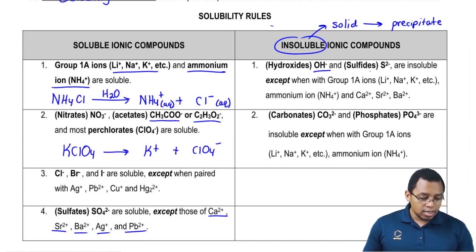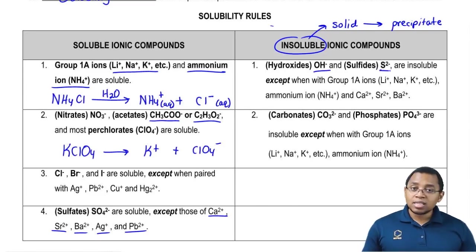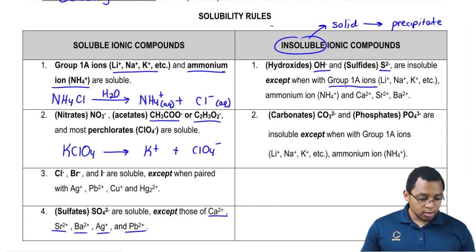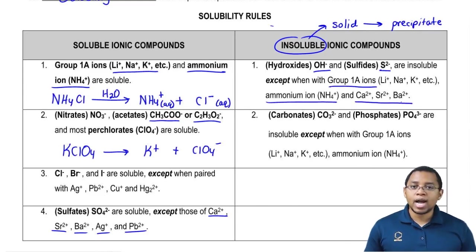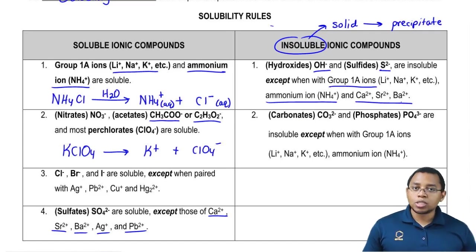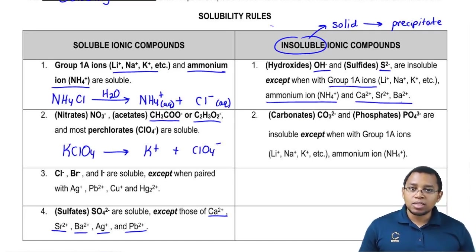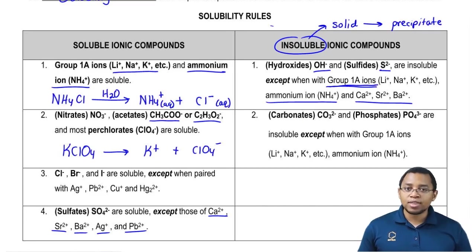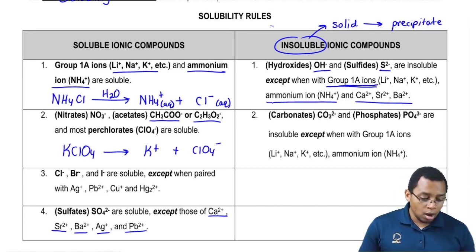OH⁻ and S²⁻ are insoluble except when they're with group 1A, ammonium, or one of the group 2A ions. You can see how the things fit together — of course they would be soluble with group 1A ions because group 1A ions are always soluble with everyone. Ammonium is always soluble with anyone.